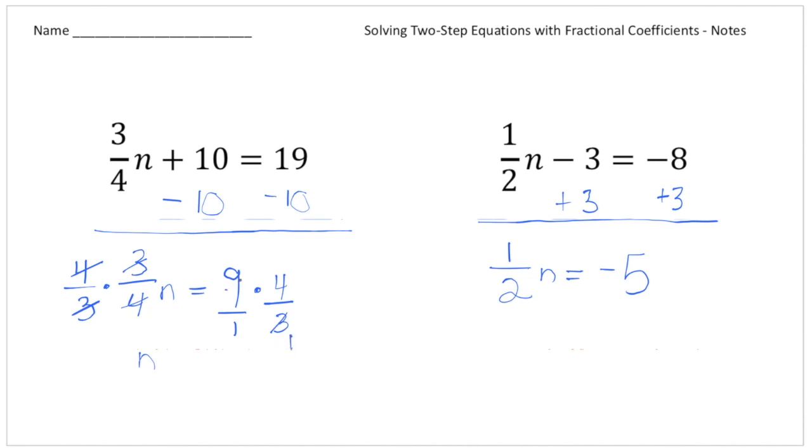I can make this 3 a 1 and make this 9 a 3. And then finally, 3 times 4 gives us 12. So our first solution is n equals 12.